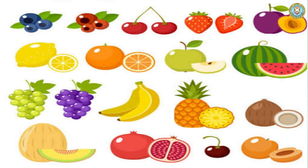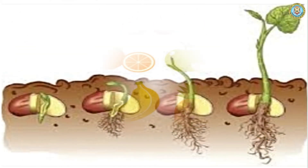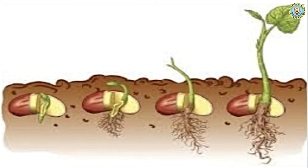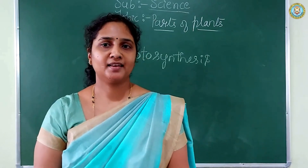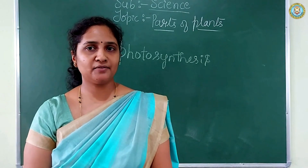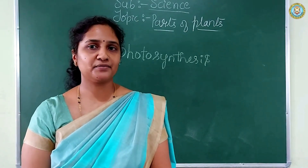Fruit is a part of the plant that grows around the seeds. When we sow a seed in the soil, it grows into a plant. These seeds are the primary source of reproduction in plants. Observe this image of the germination of seeds. In today's class, we discussed the functions of leaves, the functions of flowers, and the functions of fruits.